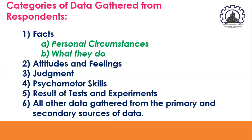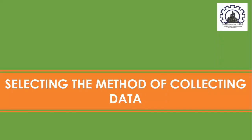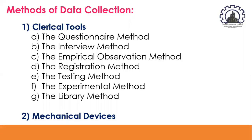This is all about the first key area of our lesson — the classification of data according to source. Moving on to the next key area: selecting the method of collecting the data. There are several ways of collecting data: first, we have the clerical tools, and second, we have the mechanical devices. Under clerical tools, we have the questionnaire method, the interview method, the empirical observation method, the registration method, the testing method, the experimental method, and the library method.